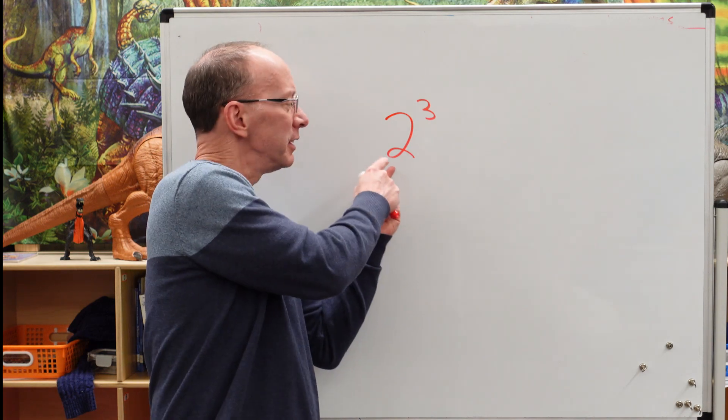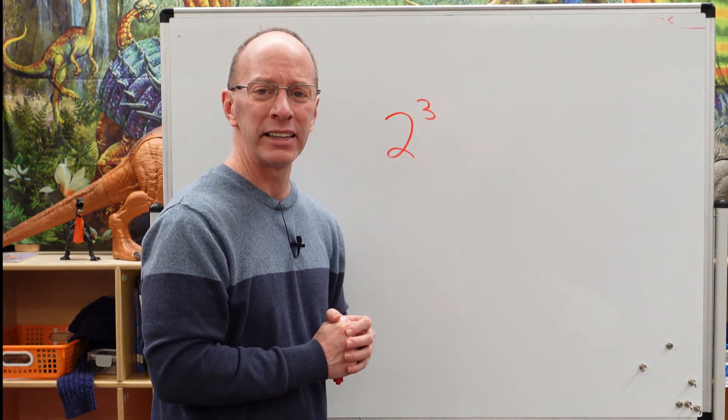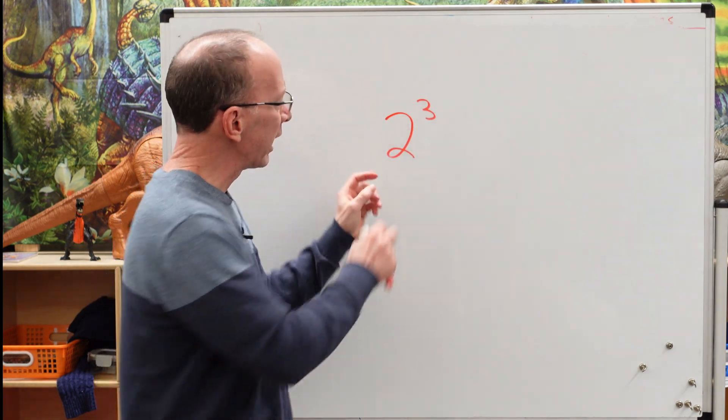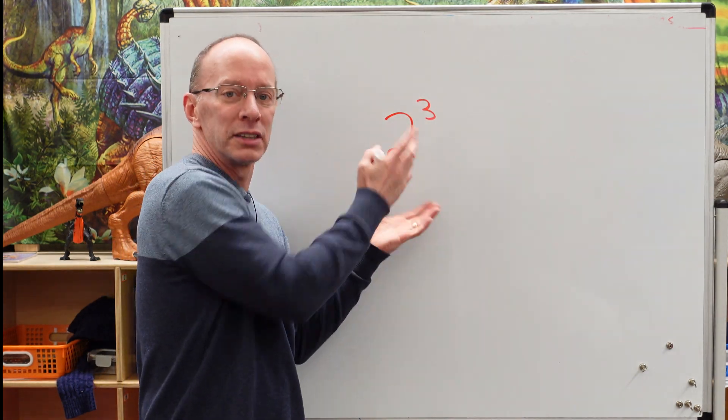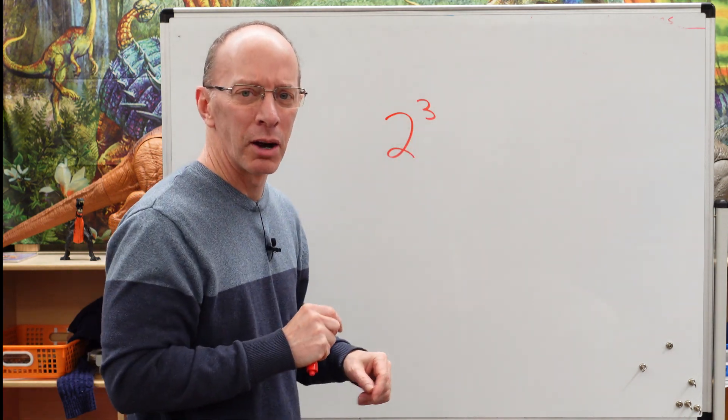This number right here, this is the base. And up here, that's called the exponent. Now you'll see that I wrote this number regular size. And this number here, you're going to write just a little bit smaller.